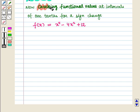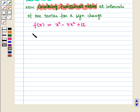Now checking functional values at intervals of one tenth for a sign change. We see that f(1.1) = 8.1401, f(1.2) = 7.1616.